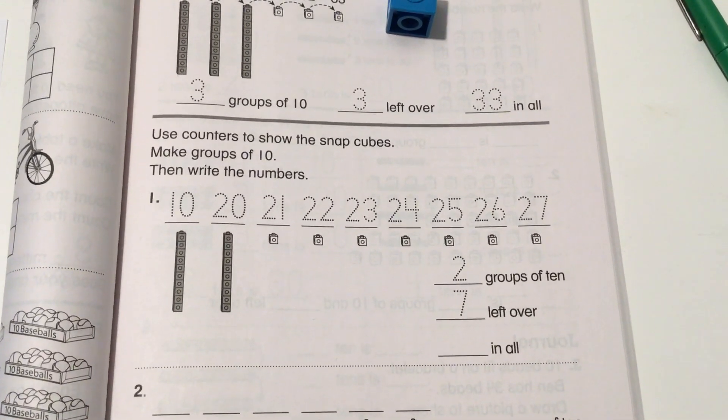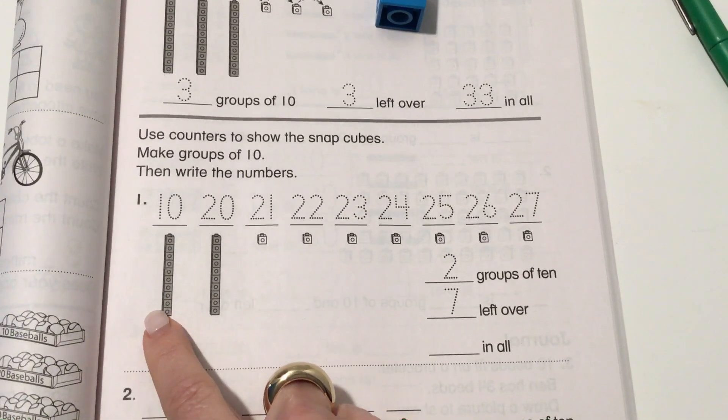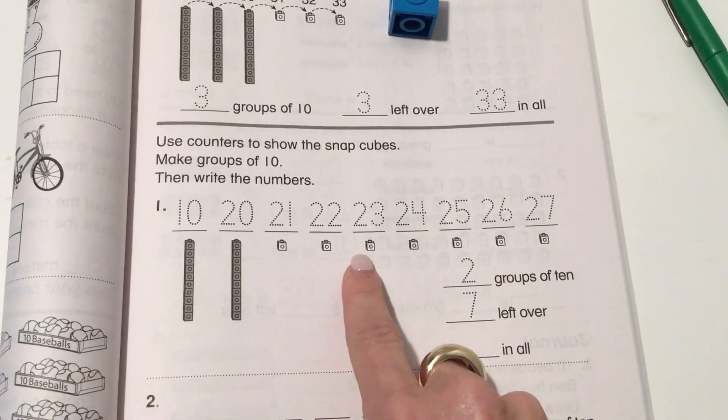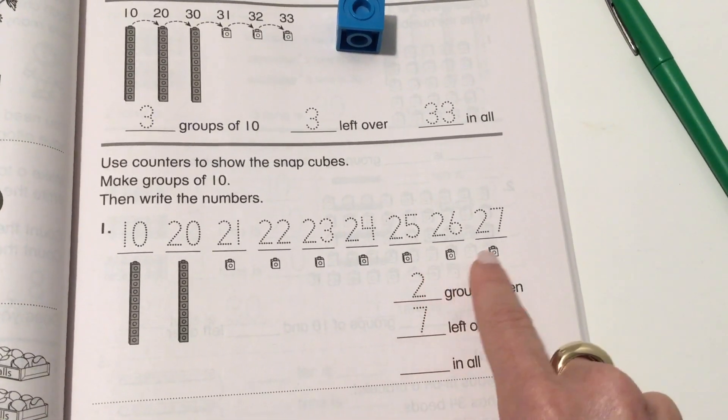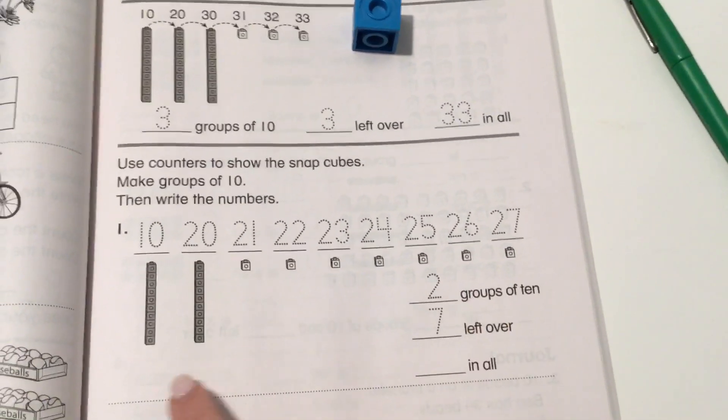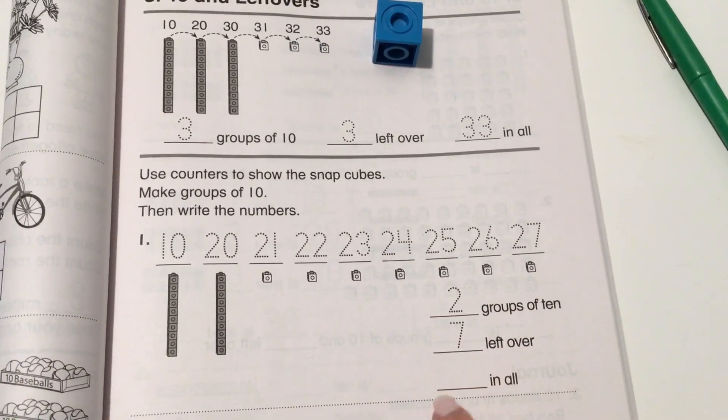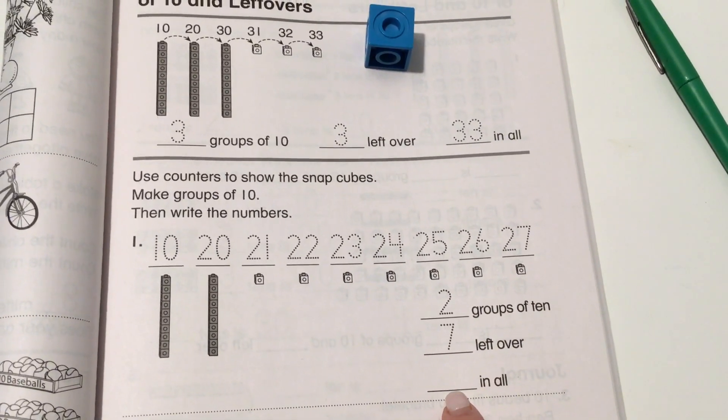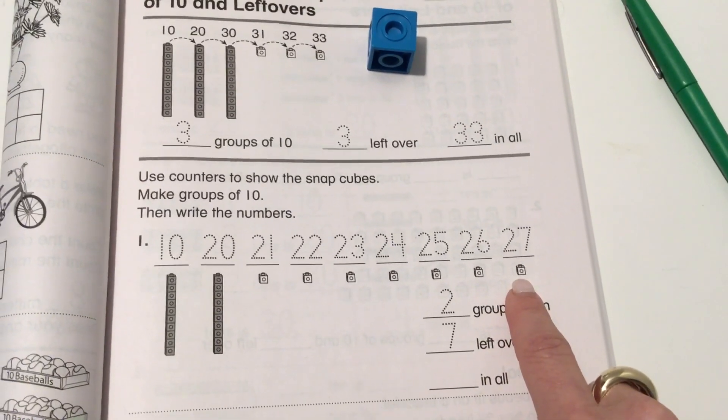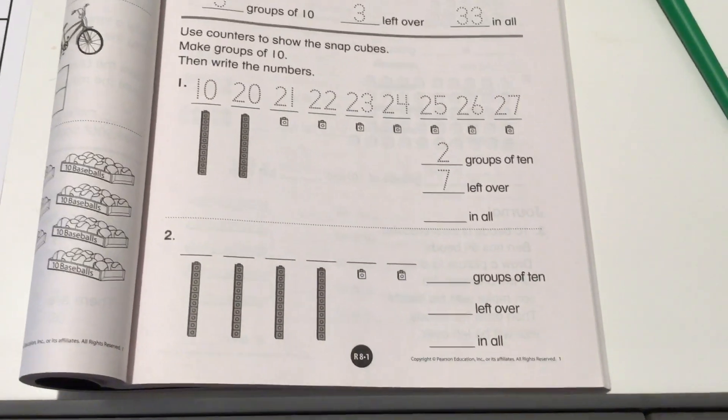Or you can just use the picture in the book to show 10, 20, 21, 22, 23, 24, 25, 26, and 27 which is just 2 groups of 10 and 7 left over. Then it's up to you to tell how many in all and I think you know it's 27. Continue that way on the rest of this page and the page behind it.